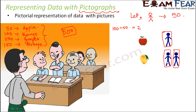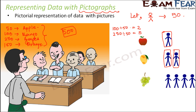So mango is liked by 100 people. Now, for grapes — 250 people. How many symbols do we need? 250 divided by 50 equals 5, so for grapes you would have 5 symbols. And the last one, orange, is again 100, so for orange you would again have 2 symbols. You see, with the help of pictures, nowhere did you write 50 or 100 or 250 — you just made use of this picture to represent the entire set of data. This is an example of a pictograph, and that is why it is called pictograph because it makes use of pictures.